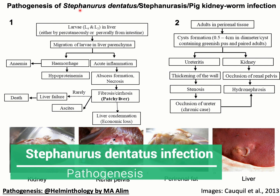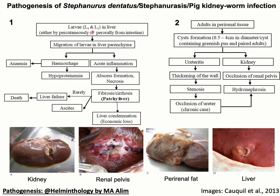Regarding pathogenesis of Stefanurus dentatus infection or stefanuriasis: the immature stages L4 and L5 wander in the liver parenchyma for around three months. Due to migration of the immature stages, particularly L5, there will be severe hemorrhages contributing to anemia and hypoproteinemia. One of the major functions of hepatocytes is protein synthesis — albumin, globulin, fibrinogen — so due to migration of the immature parasite, hepatocytes will be destroyed leading to generalized hypoproteinemia. There will be acute inflammation, abscess formation, and necrosis.